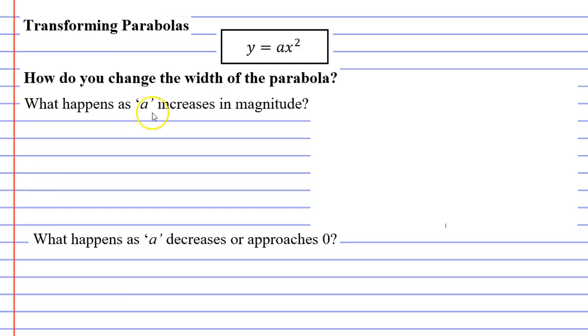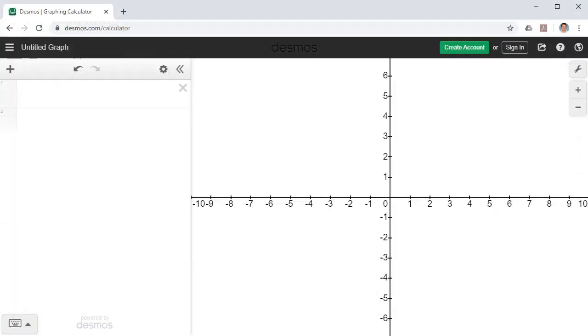So moving on to our first transformation, we're going to talk about changing the width of the parabola. So I'll bring up Desmos here and we'll write our very basic parabola y equals x squared, like so.